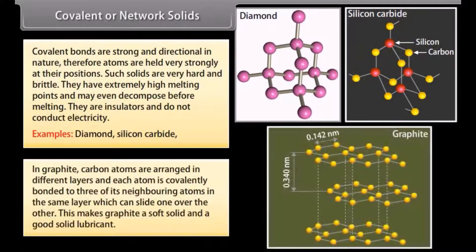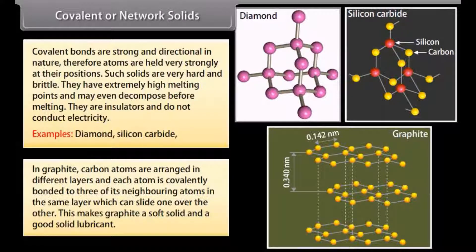In graphite, carbon atoms are arranged in different layers and each atom is covalently bonded to three of its neighboring atoms in the same layer which can slide one over the other. This makes graphite a soft solid and a good solid lubricant.